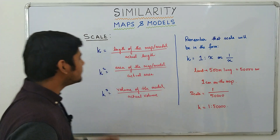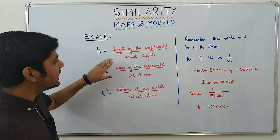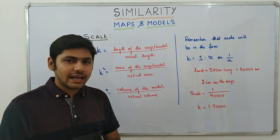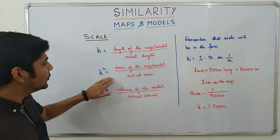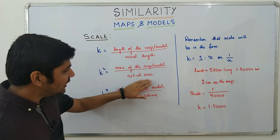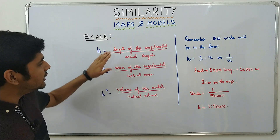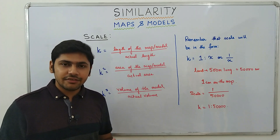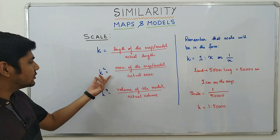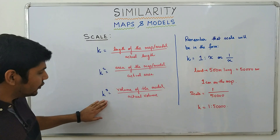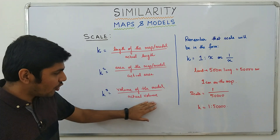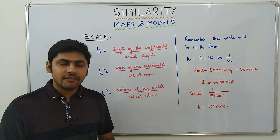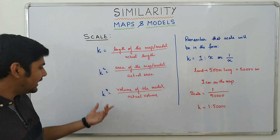We have a few more things. Number one, K equals length of the map or model divided by actual length — which is what we just did: 1 cm over 50,000 cm. Number two, K² equals area of the map or model divided by actual area. It is the same idea but for area instead of length, and K is squared because area is two-dimensional — we have a length and a breadth. Number three, K³ equals volume of the model divided by actual volume. K is cubed here because volume is three-dimensional — we have a length, a breadth, and a height.